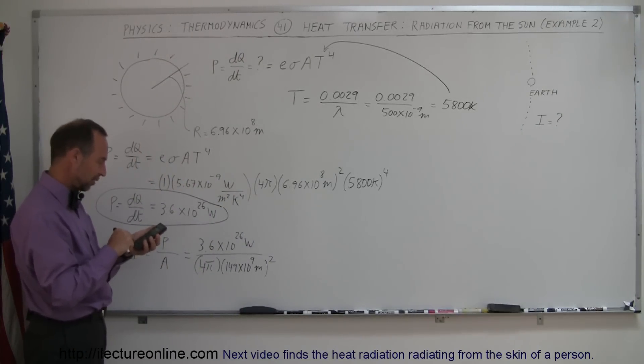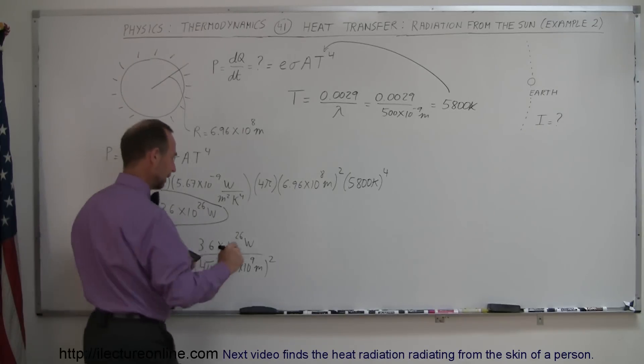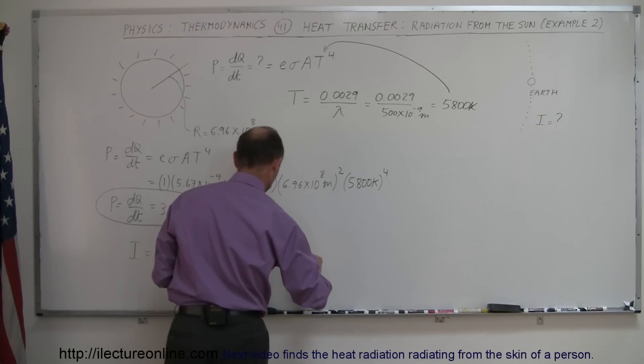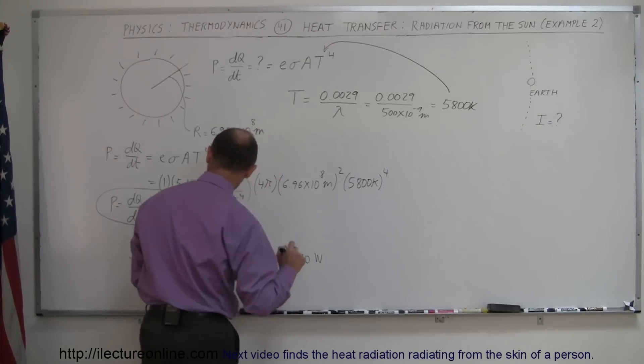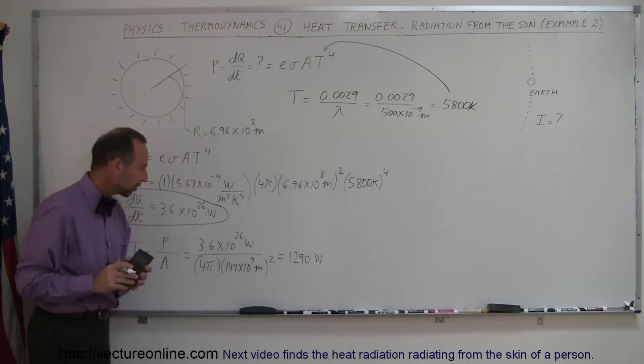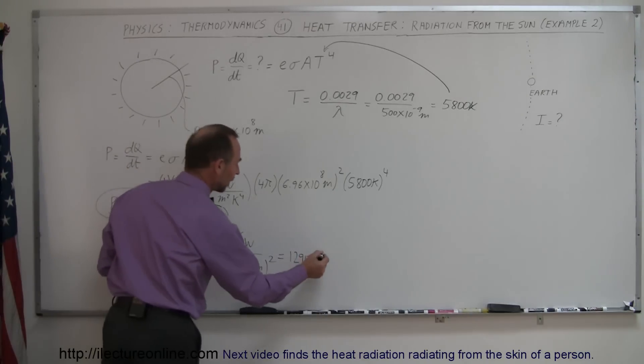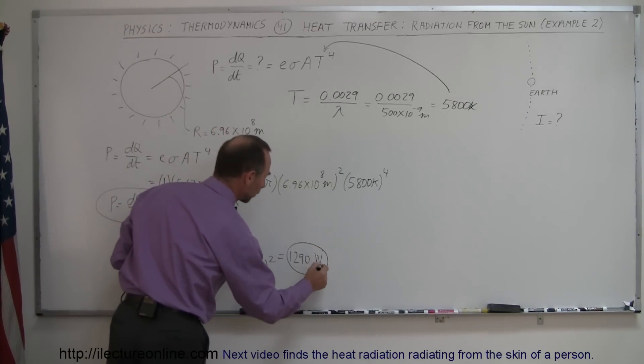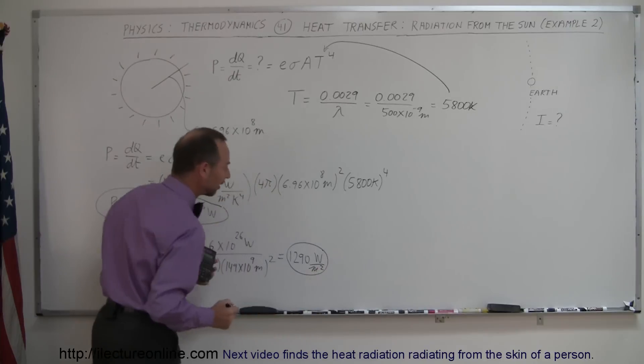All right, 3.6 E to the 26th divided by 4, divided by pi, and divided by 149 E to the 9th squared equals, hmm, I still get this, 1290 watts per square meter, that would be joules per second or watts, 1290 watts. That would be the intensity, per square meter, of course, because it's intensity.